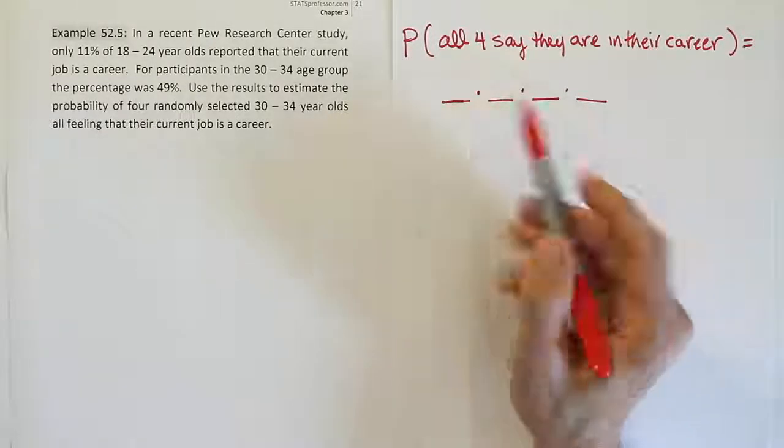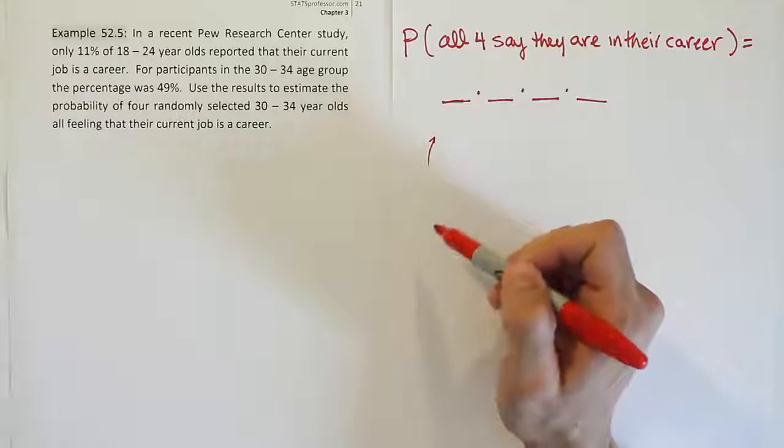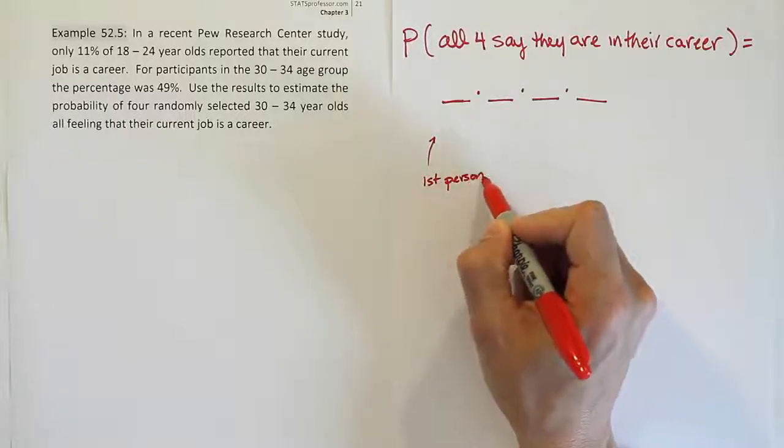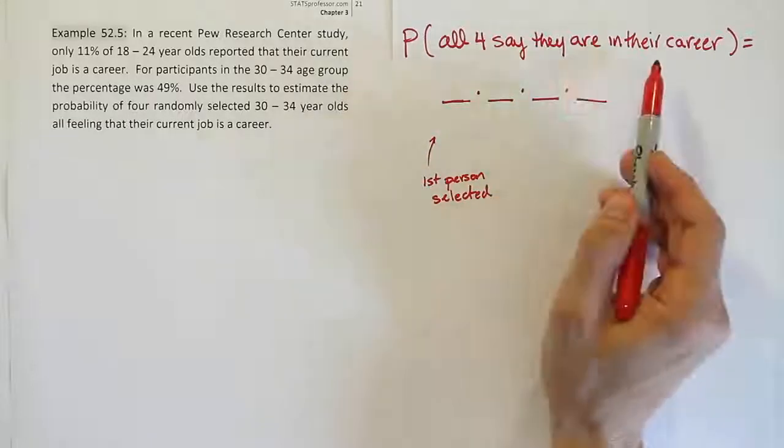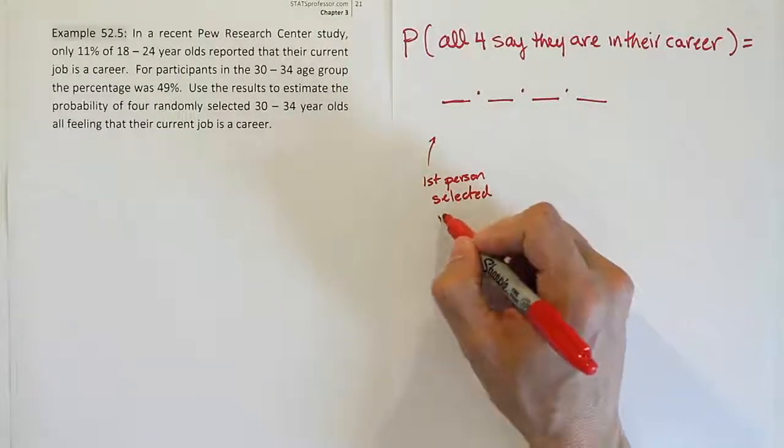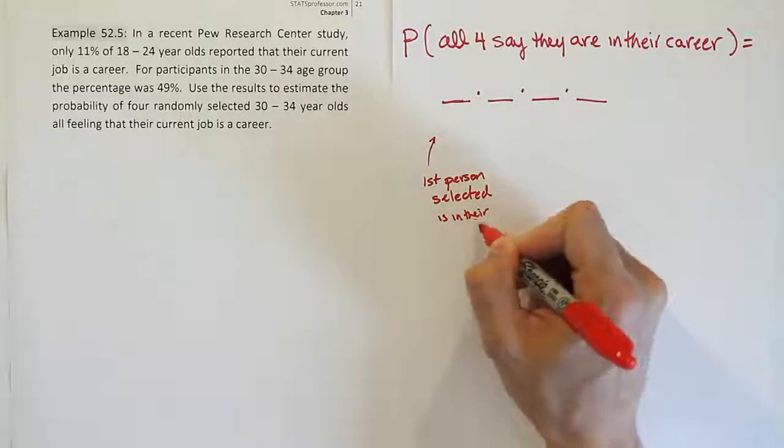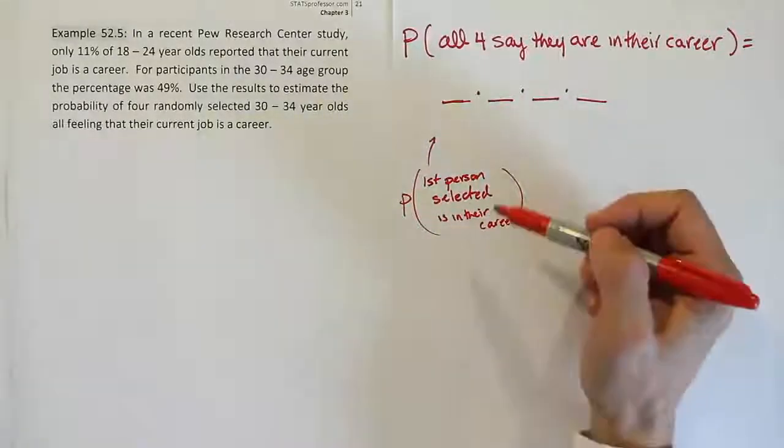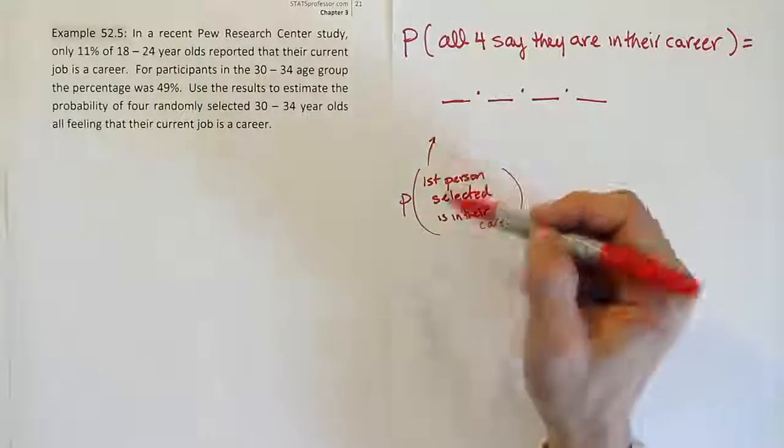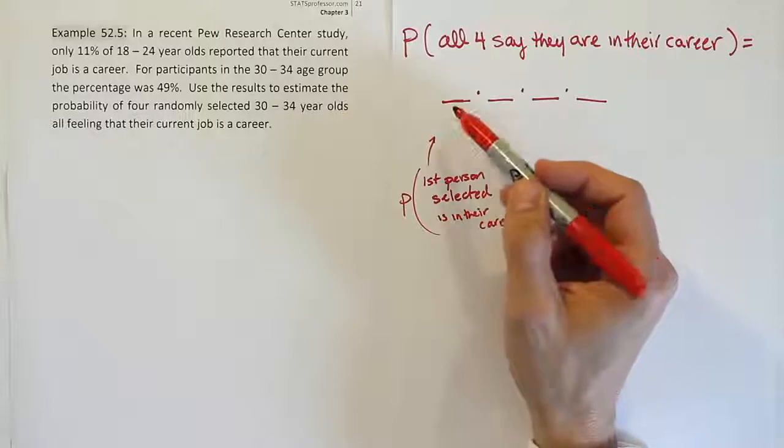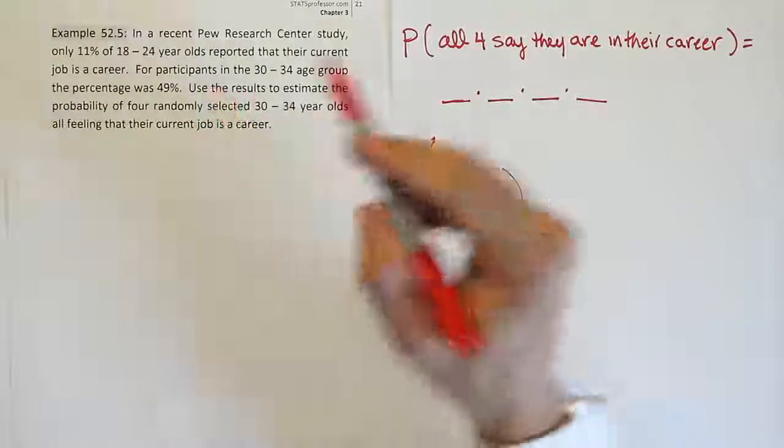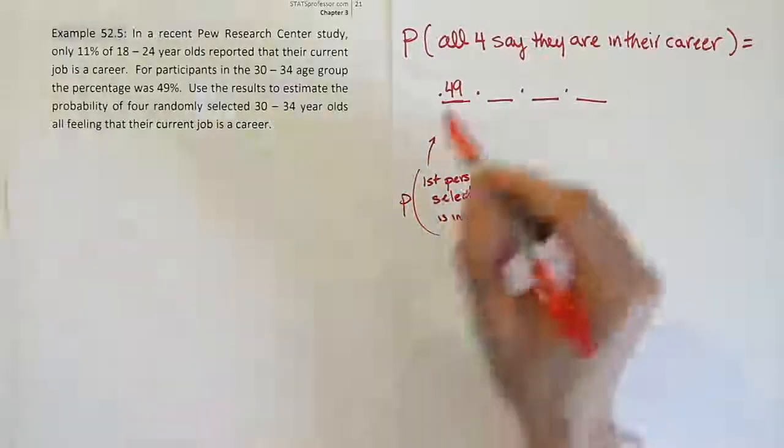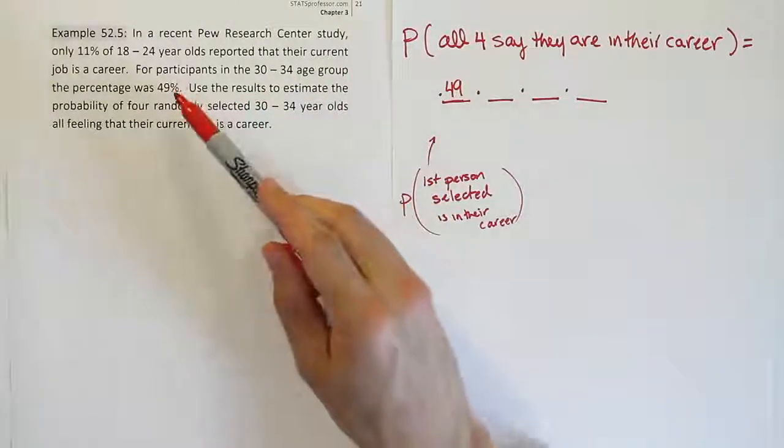From there, we have to figure out what each fraction represents. We're going to look at that first fraction - it's obviously the first person selected. And how do we want that to turn out according to this problem? We want that first person selected to be in their career. In the 30 to 34 age group, which is who we're selecting, what's the probability they say they're in their career? According to the problem, that probability is 49%. So we'll write that as a decimal, 0.49.